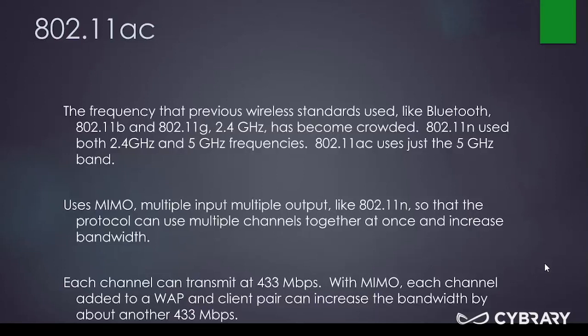802.11ac also uses MIMO — multiple input, multiple output. It's a bonding technology where you have multiple channels across both the 2.4 gigahertz and 5 gigahertz frequencies. They can be bound together on a logical layer to increase bandwidth to a device. Each channel transmits at 433 megabits per second, and each time a wireless access point and client pair up, they can increase bandwidth by another 433 megabits per second.